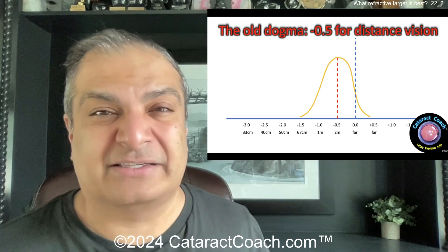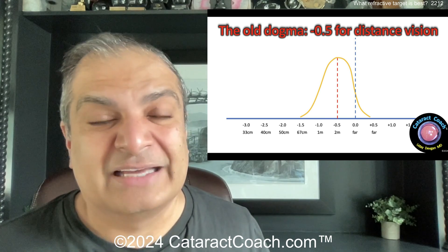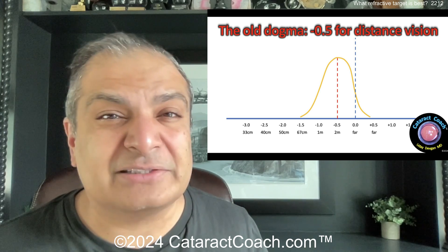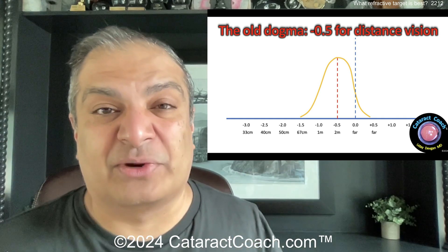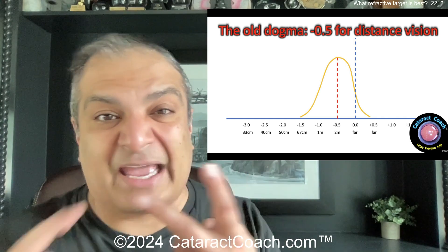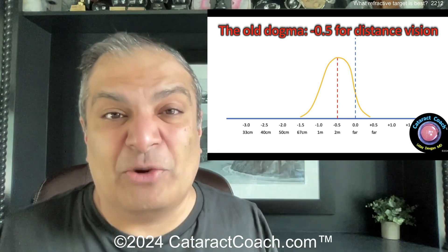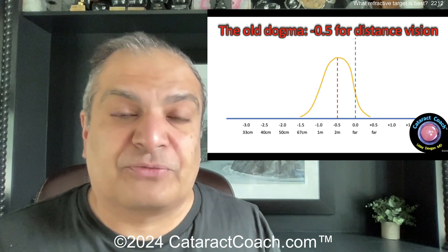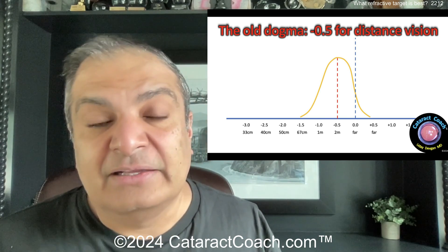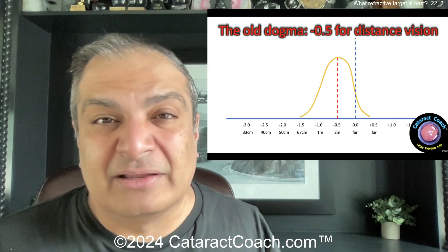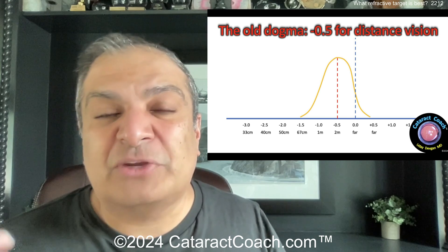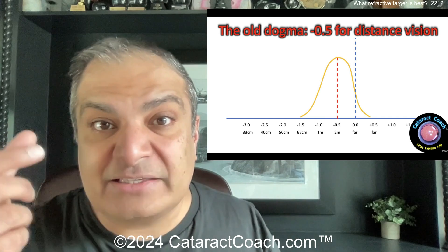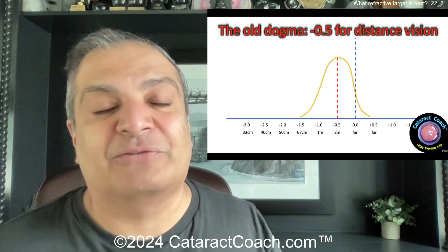We used very simple methodologies — remember the SRK formula, SRK2, which is just the same formula with some fudge factors. The third generation formulas were simple because they only used two input variables — K and axial length — to determine the effective lens position and therefore the IOL power. Those formulas — the Hoffer Q, the Holladay 1, the SRK/T (T standing for theoretical) — were okay, but the fourth generation formulas added extra input variables such as measured anterior chamber depth, which helped a lot.